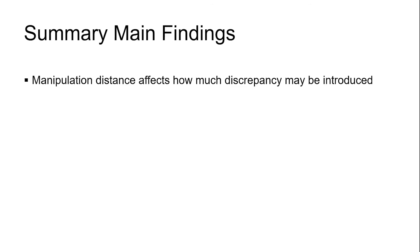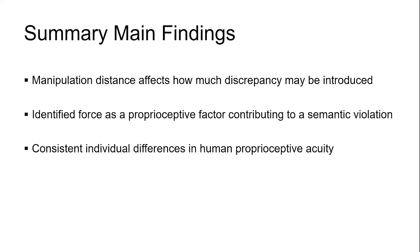To summarize the main findings of our study, we found that travel distance significantly affects how much discrepancy can be introduced. Next, we identified force as a proprioceptive factor significantly contributing to a semantic violation. And last but not least, we observed that humans' proprioceptive accuracy differs, posing an interesting question to future work whether we need some sort of proprioceptive calibration process.